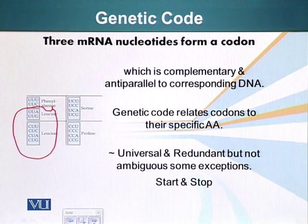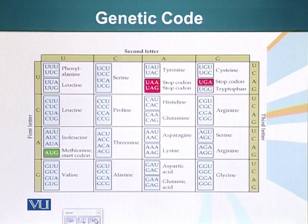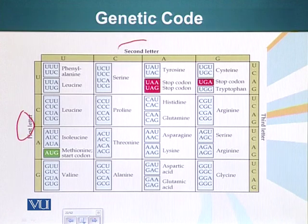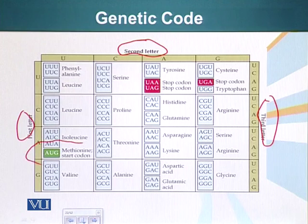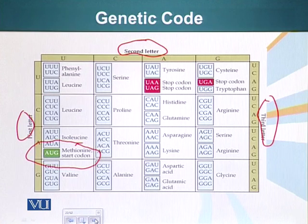There are also start and stop codons. Here I have placed the whole genetic code on the screen. You can see the first letters, second letters, and third letters of the genetic code — it is a three-letter code. AUG codes for methionine and is also the start codon, the codon which tells where to start making the protein on a messenger RNA. We will talk more about that.